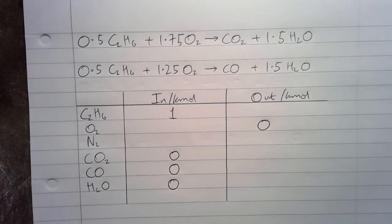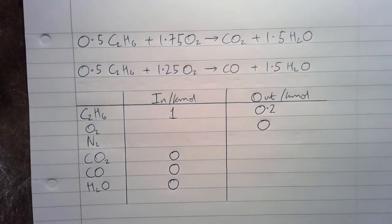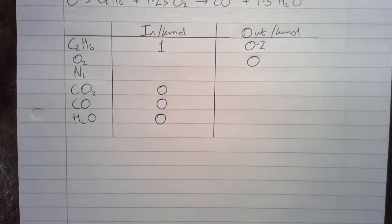Now we know that there's 80% conversion of the ethane, so that will leave 20% in the outlet gases. So that will give us 0.2 K moles of ethane in the outlet.